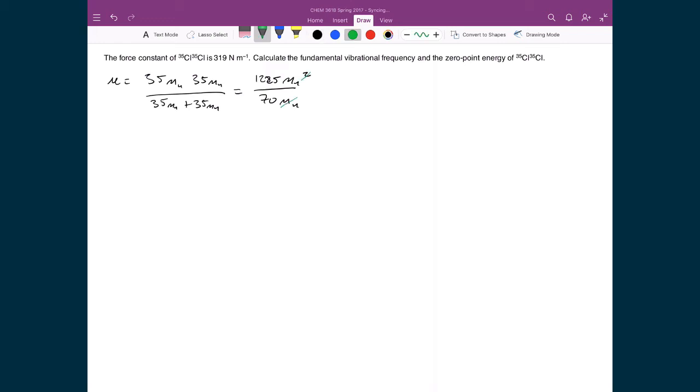So that gives me 1225 divided by 70 times the atomic mass unit of 1.661 times 10 to the minus 27, which equals 2.91 times 10 to the minus 26 kilograms.